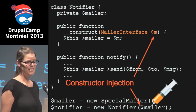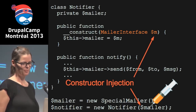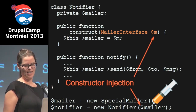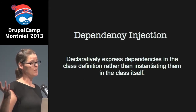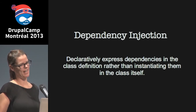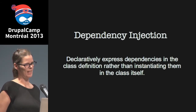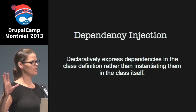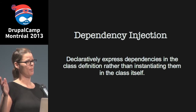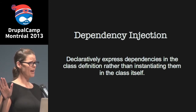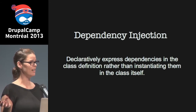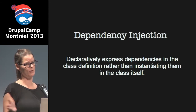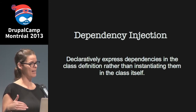That is constructor injection. It's about declaratively expressing dependencies in the class definition, rather than instantiating them in the class itself. Your class is just saying: I need this thing to do my job — it's not my business how this thing is created. If you want me to do what I do, then you have to pass me this thing.